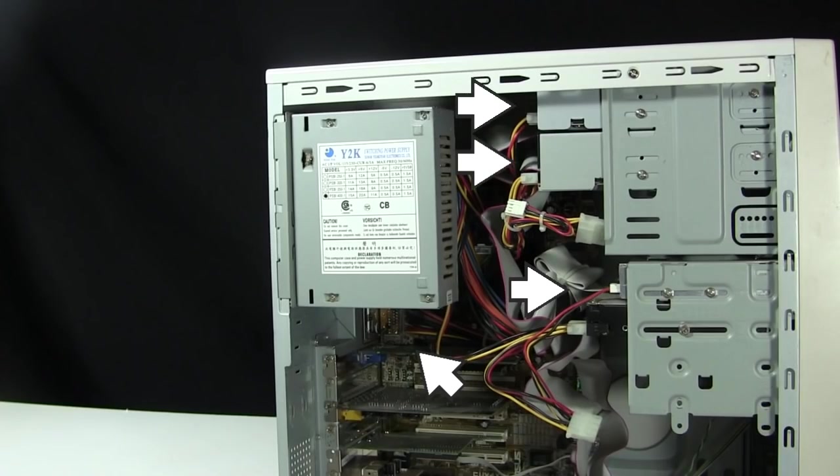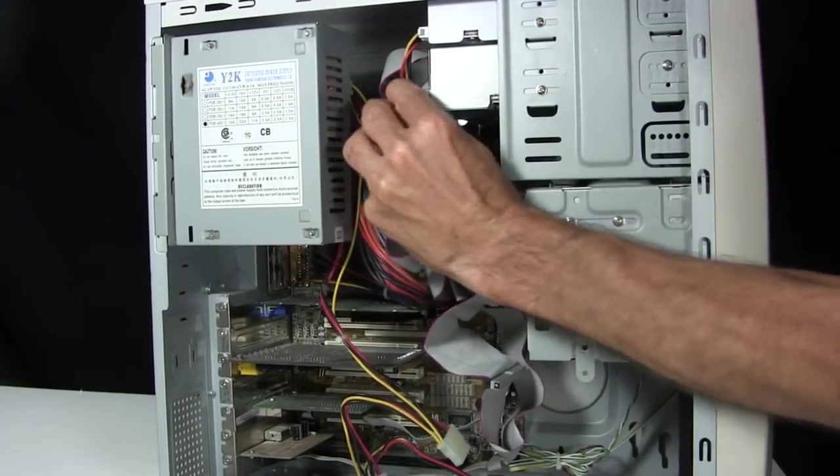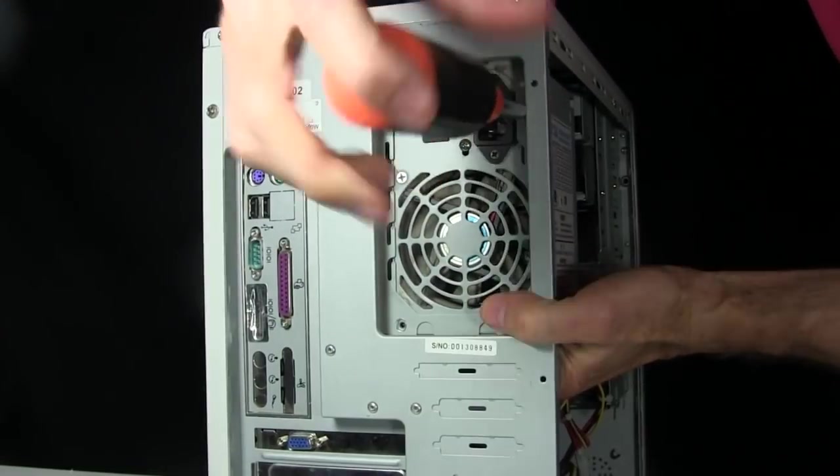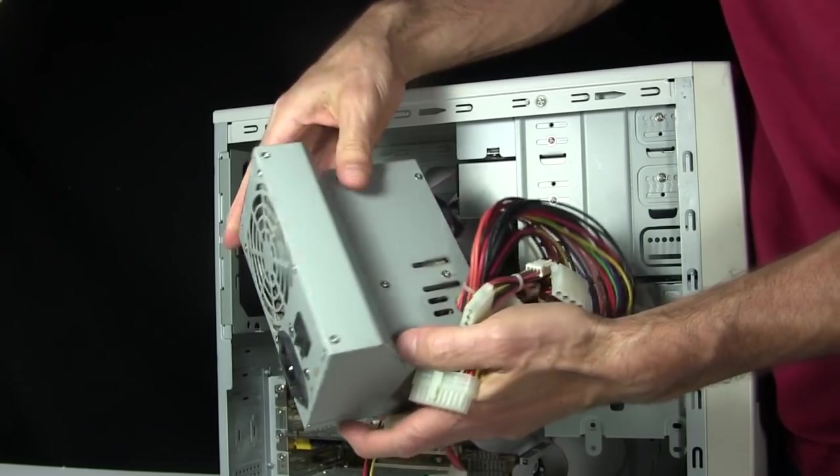Those cables supply power to the motherboard, hard drives, CD drives, and so on. I unplug them all until there's nothing connected anymore. Then I unscrew the power supply from the case. The only screws are on the back, and here it is all removed.